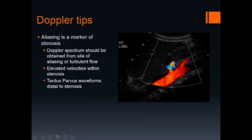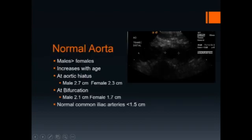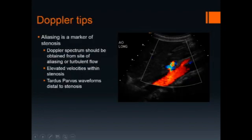In this case, from the origin of the celiac axis, where an area of aliasing is seen indicating a stenosis at the celiac axis. Elevated velocities are seen within the stenosis, and tardus-parvus waveforms are seen distal to the stenosis.